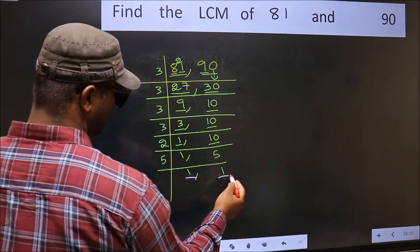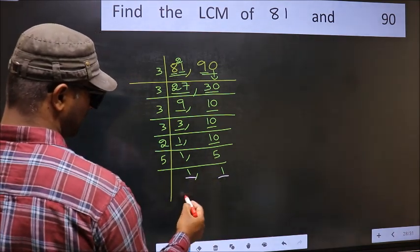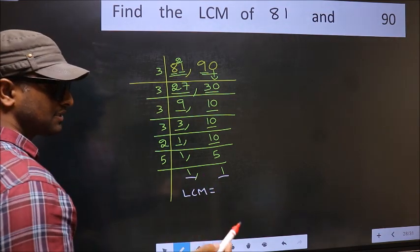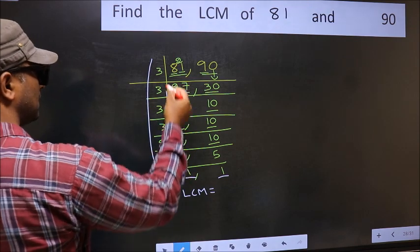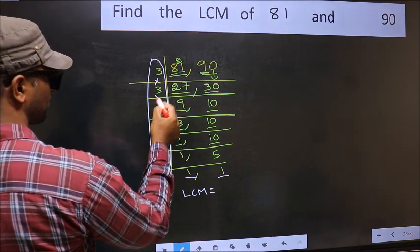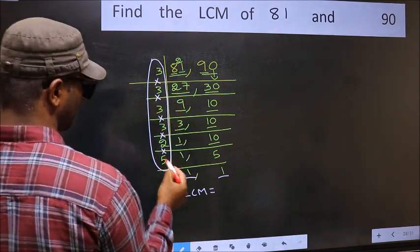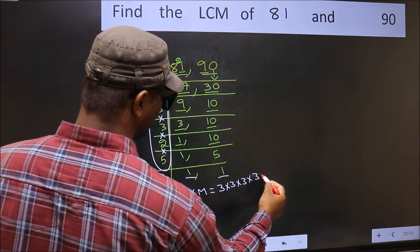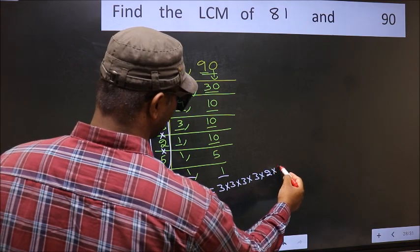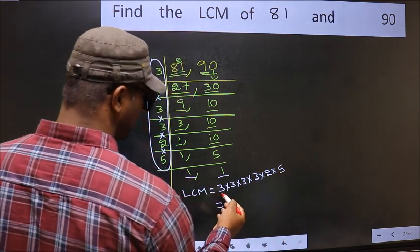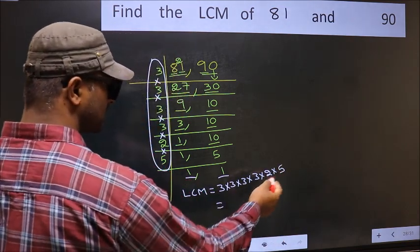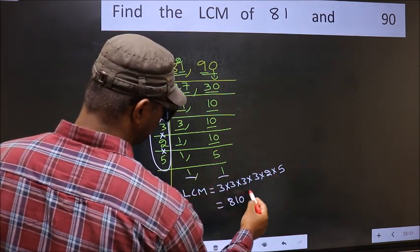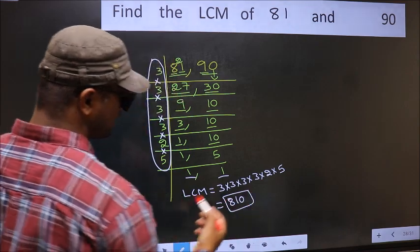We now get 1 in both places. So our LCM is the product of all the divisors used: 3 times 3 times 3 times 3 times 2 times 5. When we multiply these numbers, we get 810. So the LCM of 81 and 90 is 810.